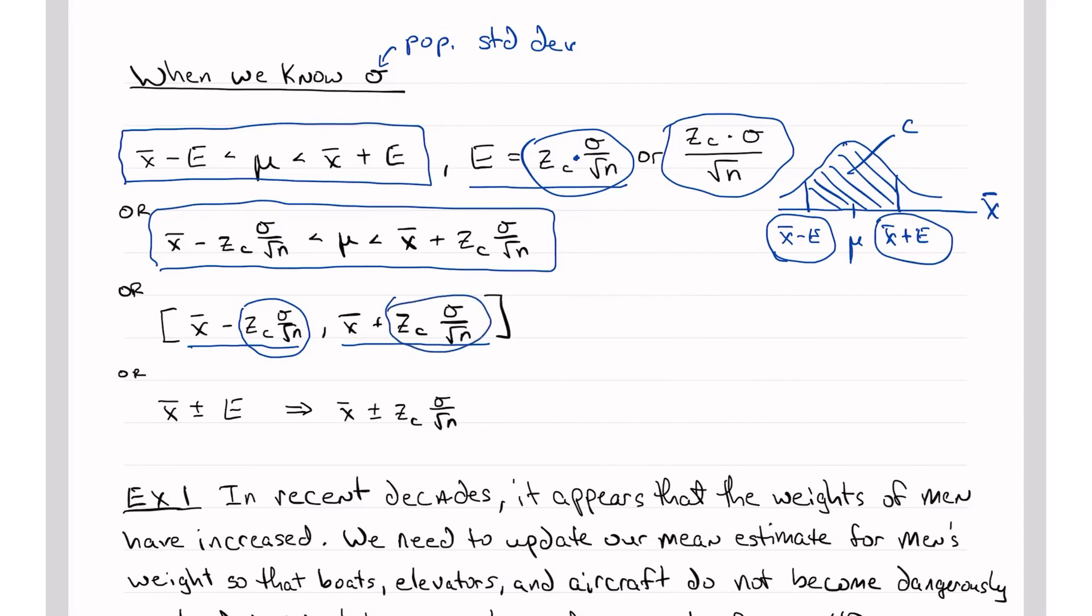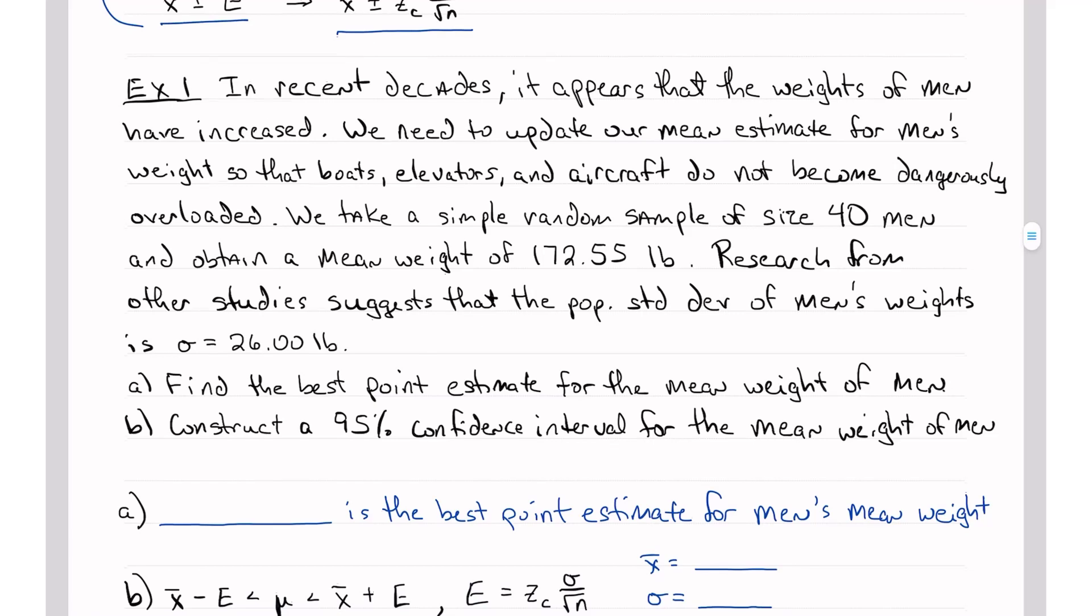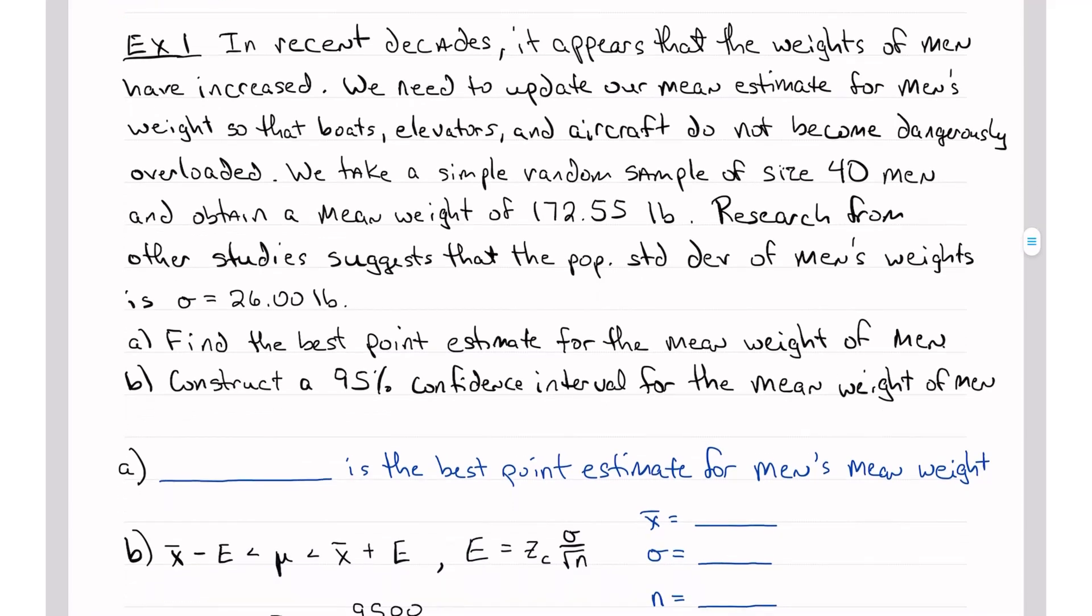Again, there's another way to write this, x bar plus or minus E, which could also be written as x bar plus or minus z sub c sigma over square root of n. These are all equivalent. They're all correct. They're all equivalent. It's just different ways of writing. So now let's get to an example so that we can put this all together again, and hopefully it will become clearer to you.